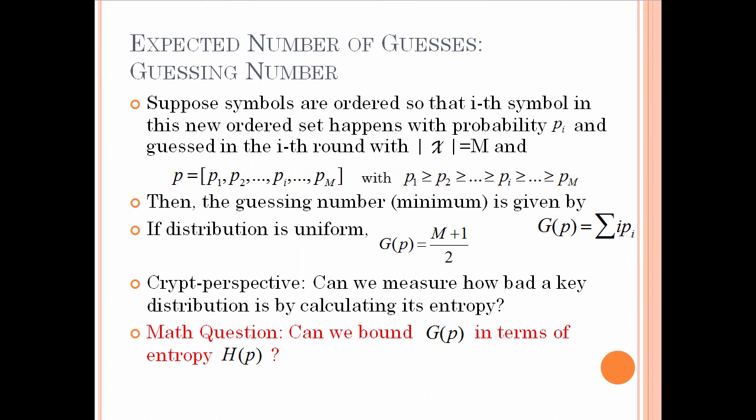Suppose symbols are ordered so that the i-th symbol in the new ordered set has probability p_i and is guessed in the i-th round. With cardinality M, we have a probability vector from p_1 to p_M summing to one, with the monotone relationship p_1 ≥ p_2 ≥ ... ≥ p_M. The guessing number G(P) is minimized by guessing the most likely value first and proceeding toward least likely values — this is the optimal guessing strategy. G(P) is given by the sum of i times p_i. For a uniform distribution, G(P) equals (M+1)/2.